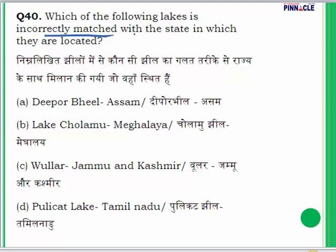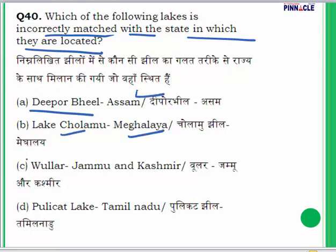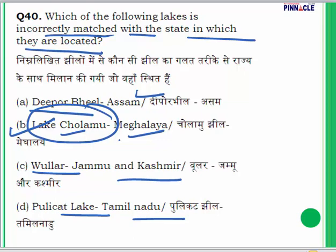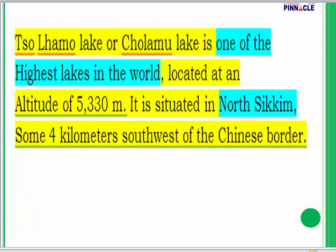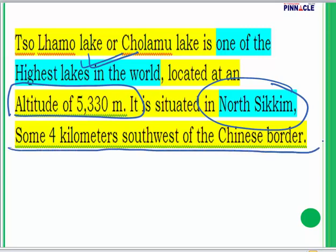Question 40: Which of the following lakes is incorrectly matched with the state in which it is located? The answer is B — Lake Gurudongmar (Cholamu) is incorrectly matched with Meghalaya; it actually lies in Sikkim. Lake Gurudongmar is one of the highest lakes in the world, located at a height of 5,330 meters, in North Sikkim, just four kilometers southwest of the Chinese border.